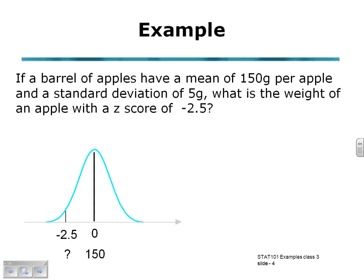Our second apple example. If a barrel of apples have a mean of 150 grams per apple and a standard deviation of 5 grams, what is the weight of an apple with a Z-score of negative 2.5? Negative 2.5 this time. So a quick sketch, we can see that the negative 2.5 lies to the left of that central position.